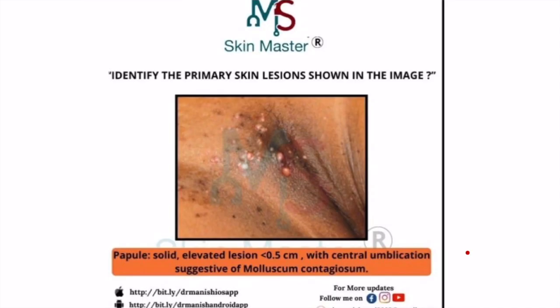As you can see, this was that image. In this image you can see that there are multiple small raised lesions. They are solid, they are not having any fluid or pus in them. They are elevated, they are raised, they are small in size. Some books mention less than 0.5 centimeters, some mention less than 1 centimeter, so these are small lesions.